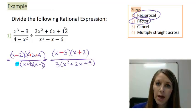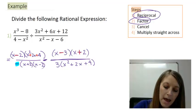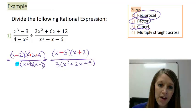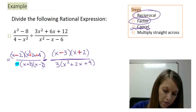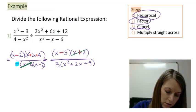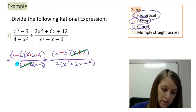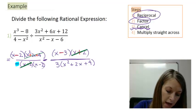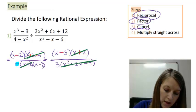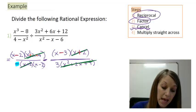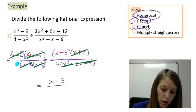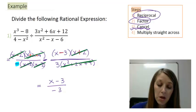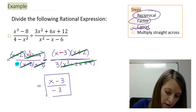Now I move to the cancel step — canceling any factors between the numerator and denominator. I can cancel x plus 2, I can cancel the big parentheses x squared plus 2x plus 4, and I can cancel x minus 2 over x minus 2. That leaves me with x minus 3 in the numerator and negative 3 in the denominator. That is my final answer.